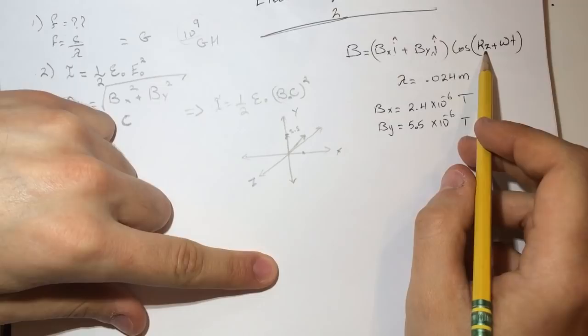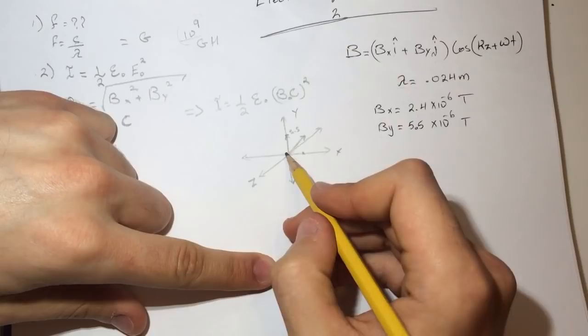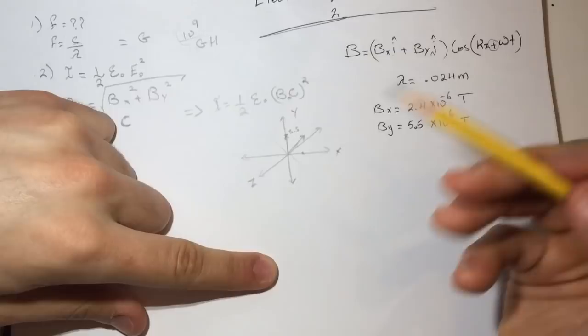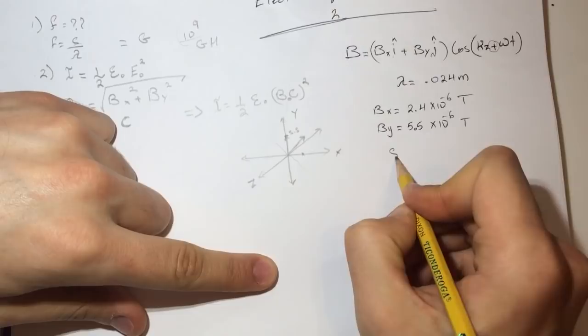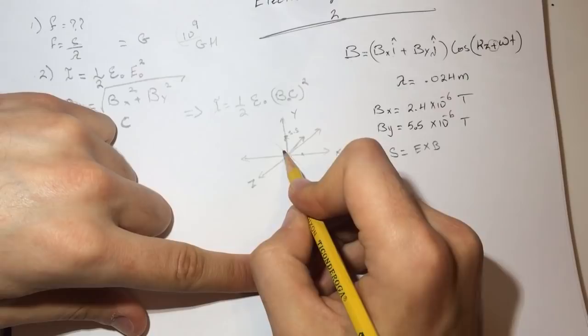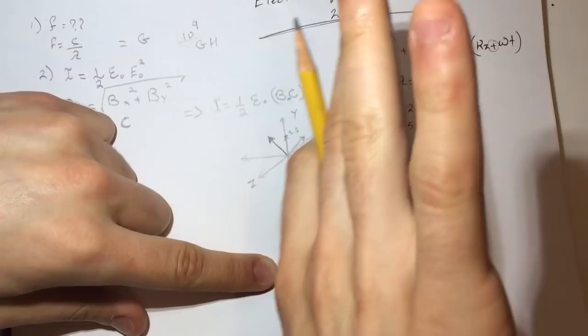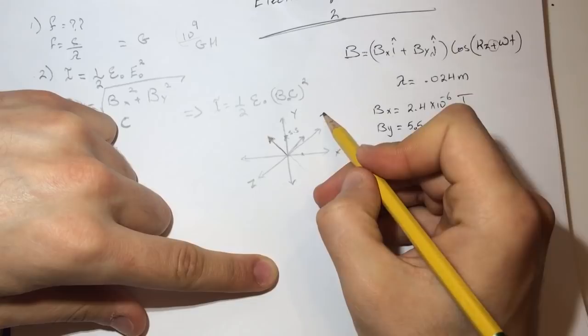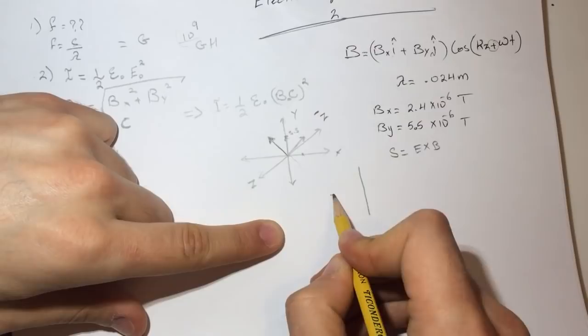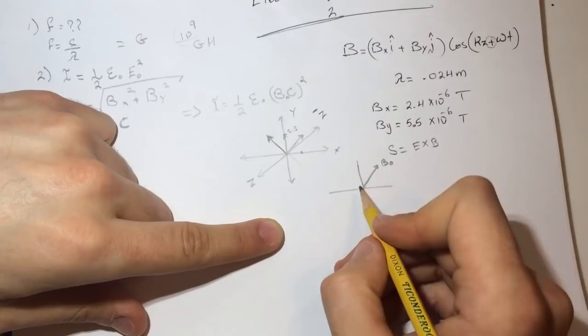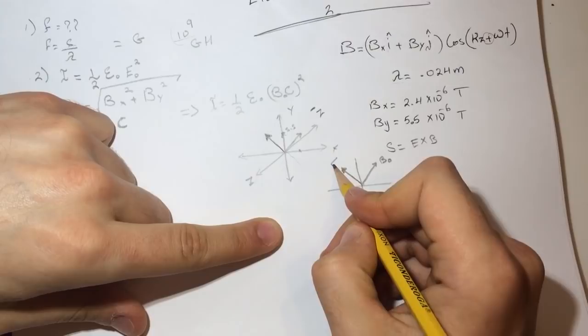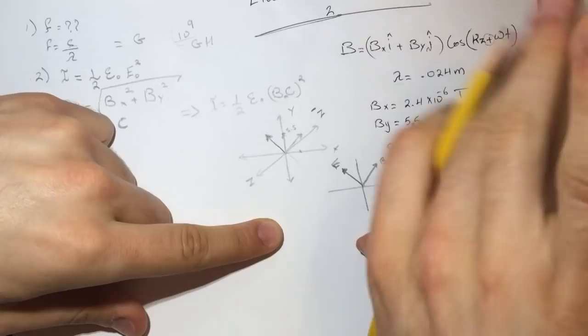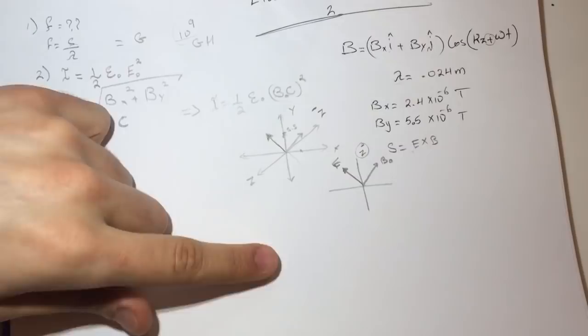Looking at the vector, this sign is positive, meaning the B vector is going back in the negative direction. The Poynting vector S equals E cross B. So when the electric field is oriented here and you do E cross B, your thumb points in the z-minus direction. Drawing this in the XY plane: B-naught is here, the magnetic field points this way, and E cross B goes into the page, which is z-minus.